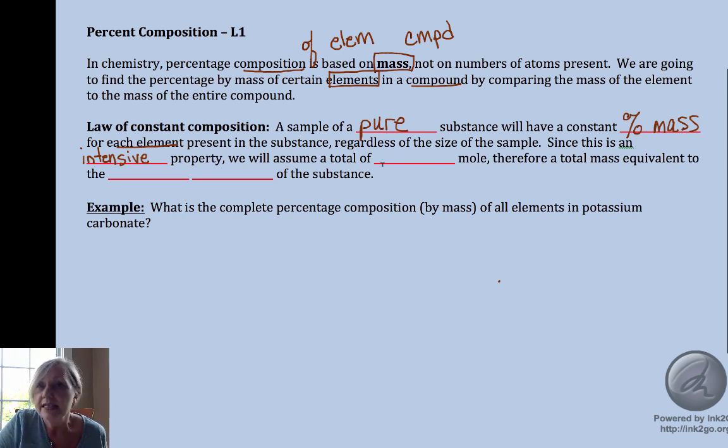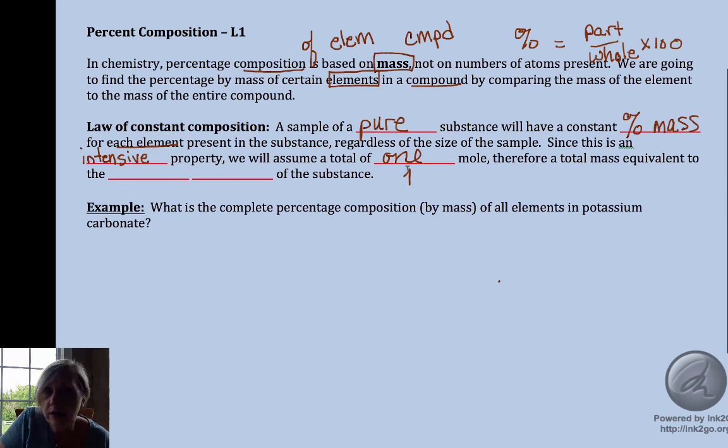And so since it's intensive, we can pick our sample size. And so we're going to choose a sample of one mole. And the reason is whenever you do a percent, a percent is the part over a whole times 100. And if we assume one mole, we can use a total mass that's equivalent to the molar mass of the substance. So it simplifies things a little bit.